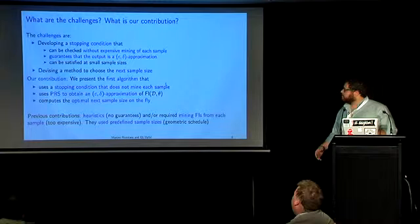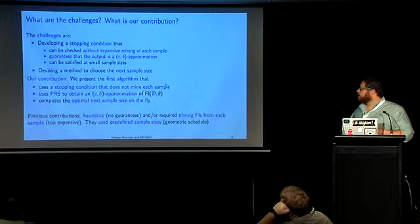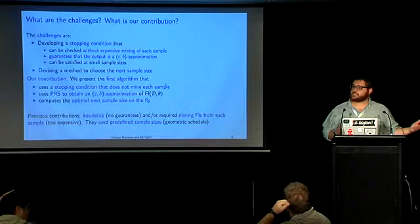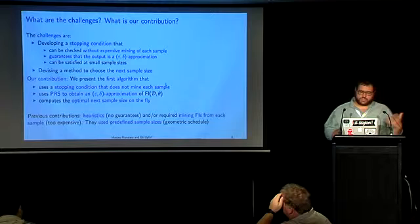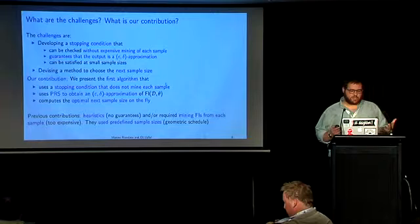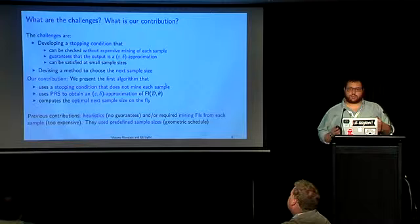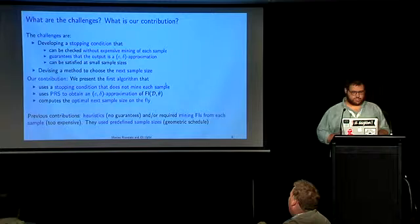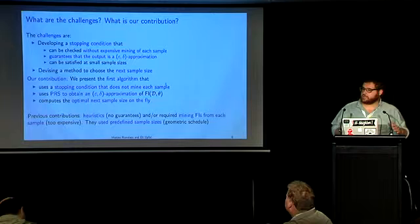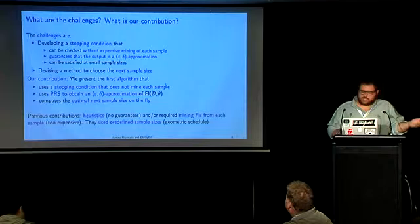The challenges and contributions are: we need to develop a stopping condition that can be checked without expensively mining the whole sample, and when satisfied, it guarantees the output is an epsilon-delta approximation. We want it to be satisfied at a small sample size, as early as possible. We present the first algorithm that uses a stopping condition that doesn't need to mine each sample, uses progressive random sampling to obtain probabilistic guarantees on approximation quality, and computes the next sample size optimally on the fly. Previous contributions were heuristic, required mining the frequent itemsets from each sample — which is extremely expensive — offered no guarantees, and had no way to establish how much more to sample at the next step.